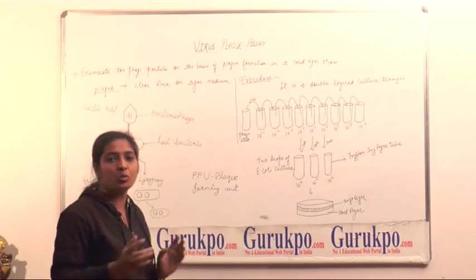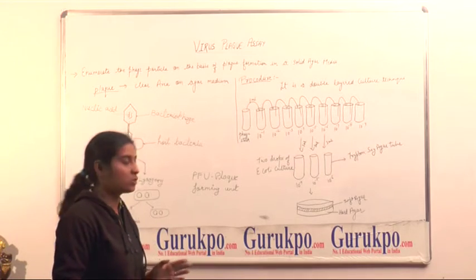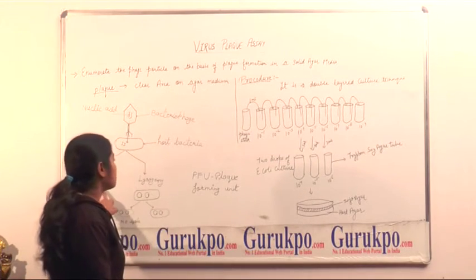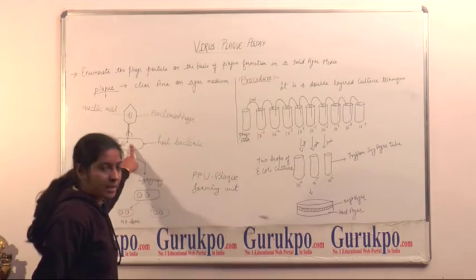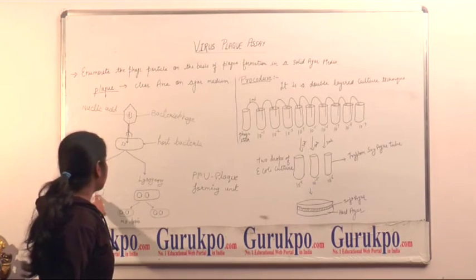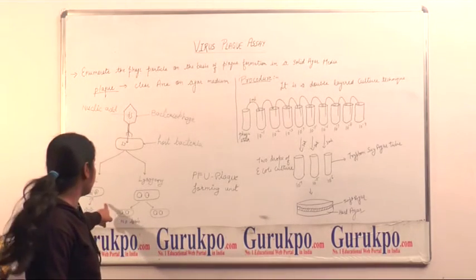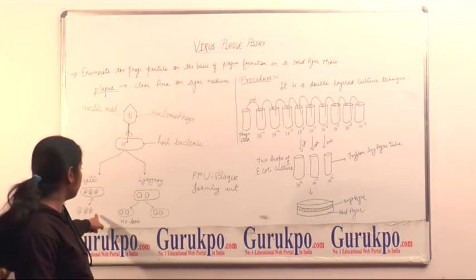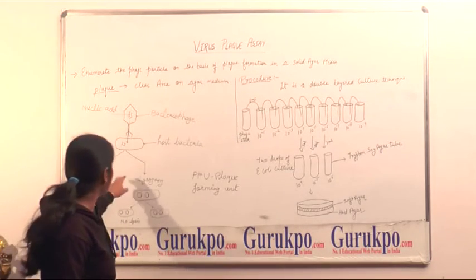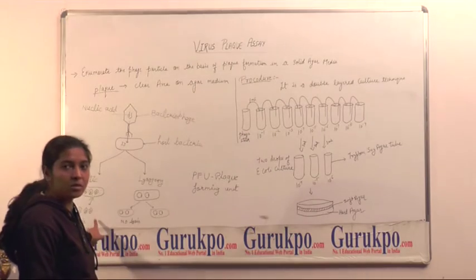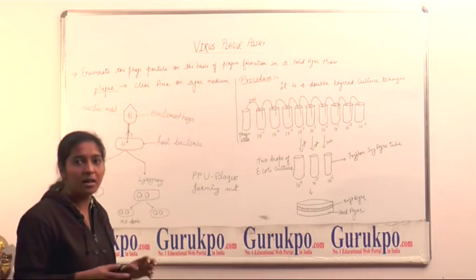Then, it causes two cycles, lytic and lysogeny. In lytic cycle, the bacteriophage nucleic acid makes new phage particles and it breaks the host cell and releases. And this lytic cycle causes plaque on agar media.